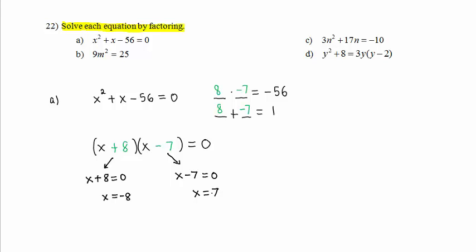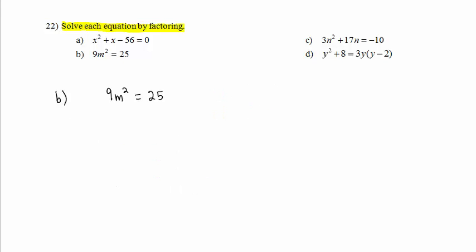Now let's move on to Part B. We have 9m squared equals 25. Remember the first step, get zero. We do that here by subtracting 25 from both sides of the equation. We have 9m squared minus 25 equals 0.